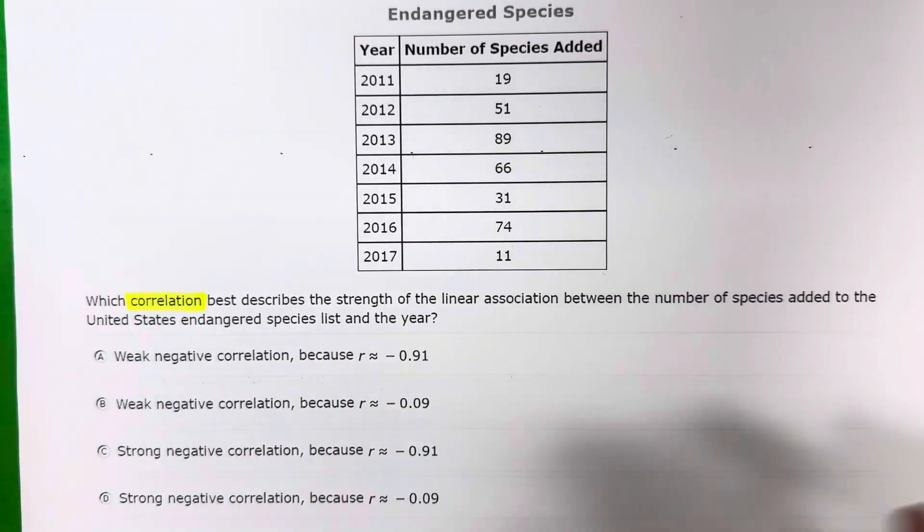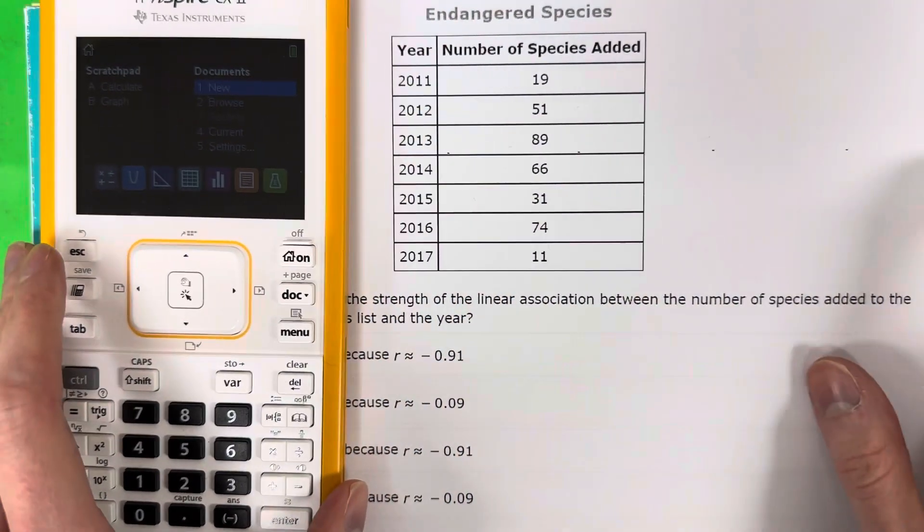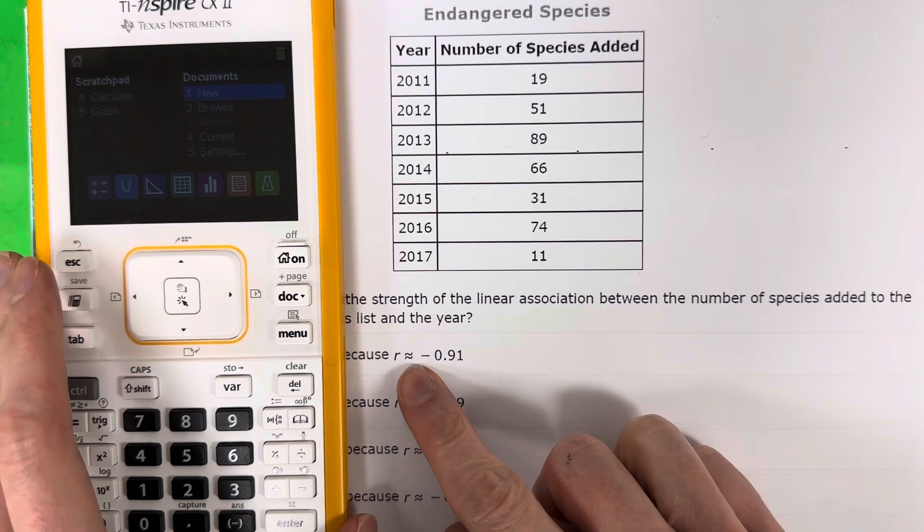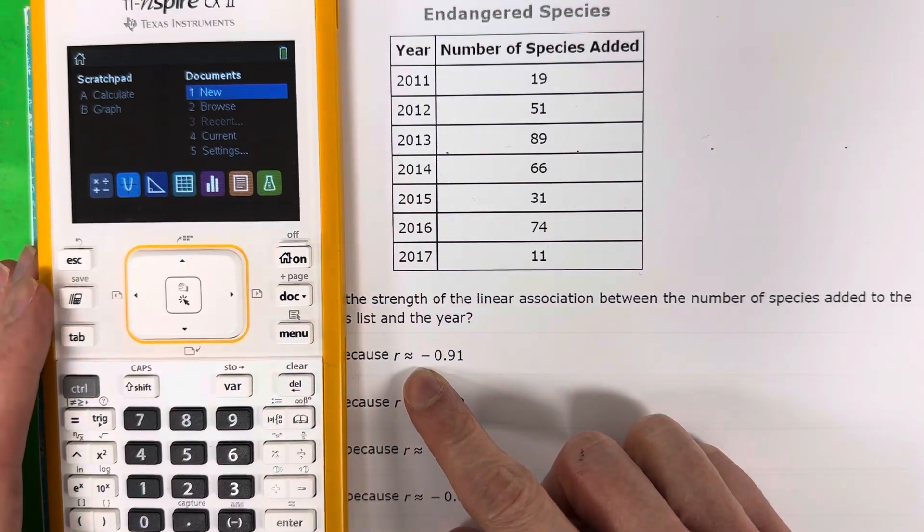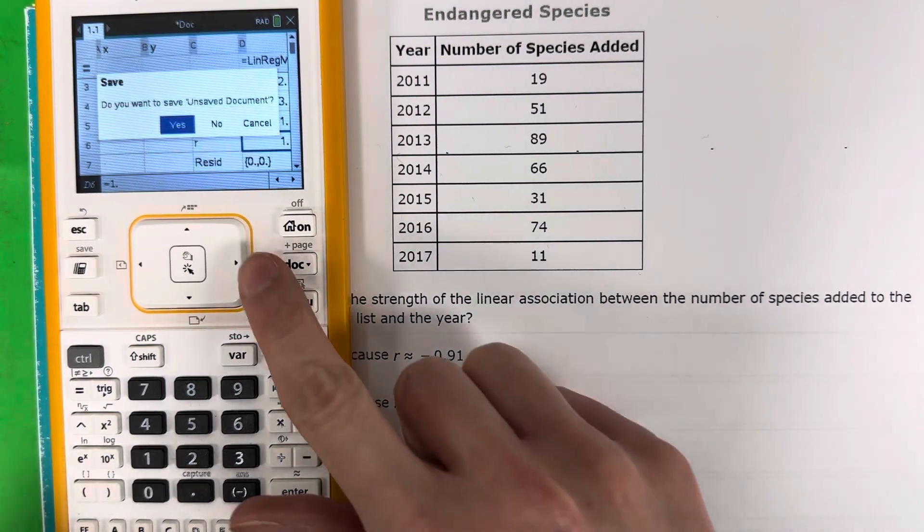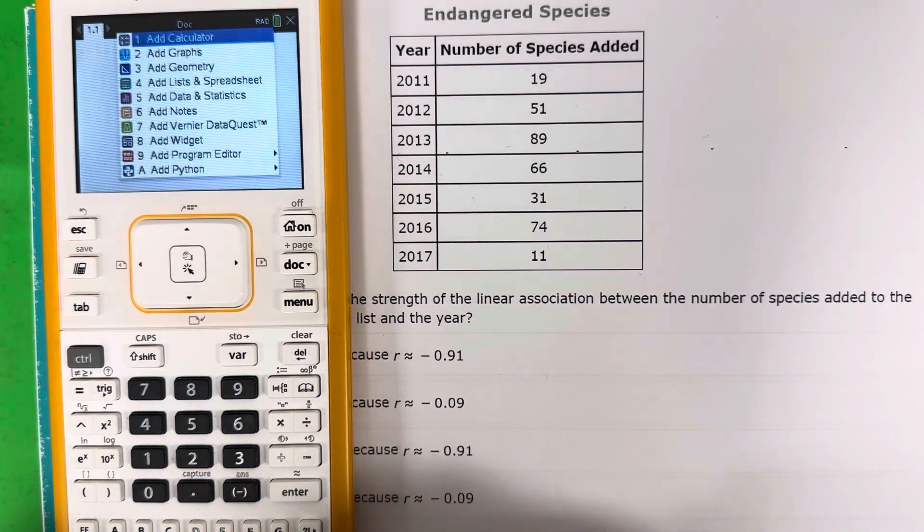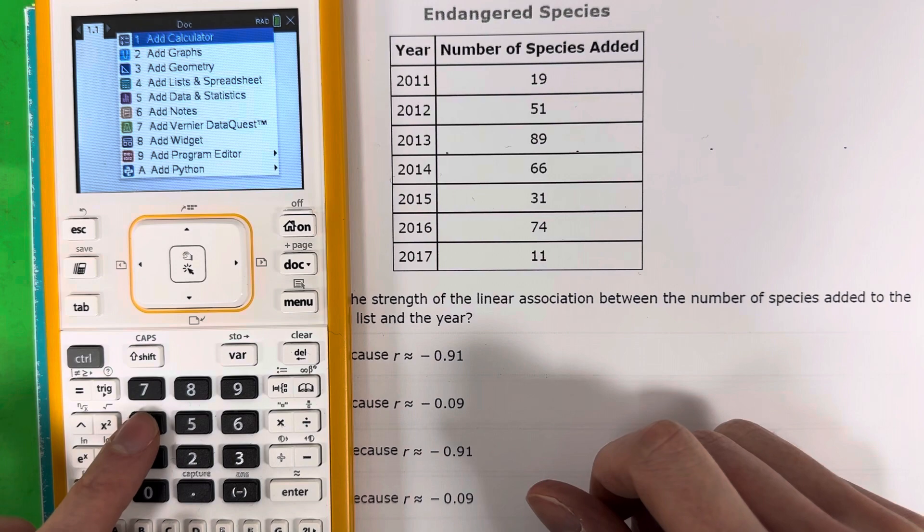So let's go ahead and grab our TI Inspire. And we are going to go ahead and find the R, the correlation coefficient. Go ahead and turn on your calculator. And to enter into that calculator, you're going to push one, then no. And then you're going to want the number four, which is the list or spreadsheets. So go ahead and push number four.